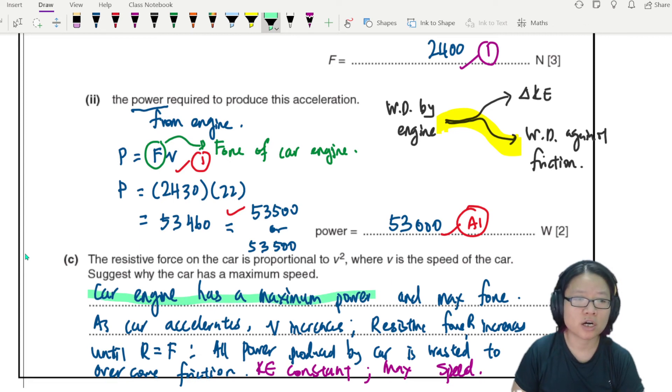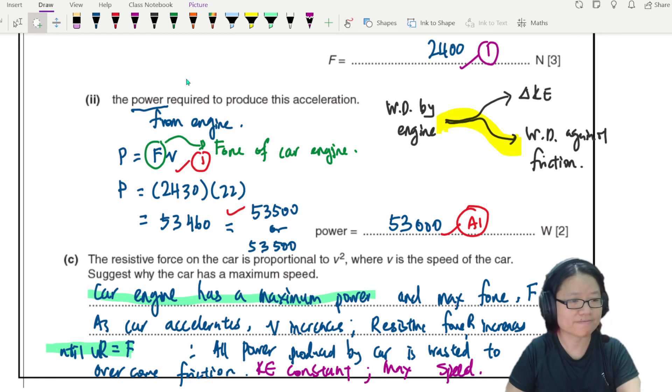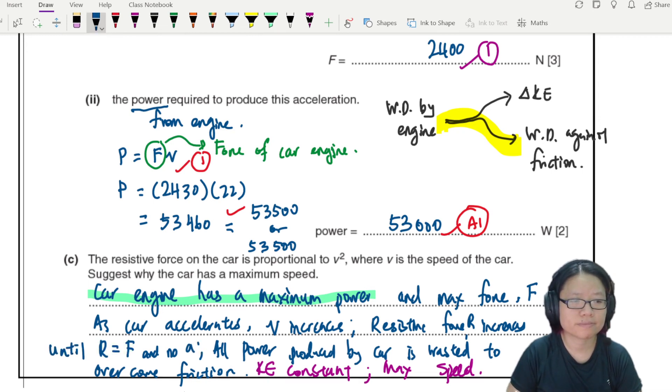the car has a maximum power. I'm going to highlight this. And when your R is equal to F, this maximum power, maximum force F. So just mention something along the line where the car engine has a maximum power and there is a maximum force R equal to F, hence there is no acceleration. So until R equal to F and no acceleration.